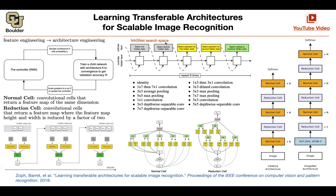Within each block, we have this definition that you can repeat this search process for B times, where B normally equals 5. But once this architecture is searched to be optimal, is that normal cell or reduction cell repeated through the entire architecture, or is each step individually searched? No, it's going to get repeated - you repeat the same normal cell every other layer or every other block. That actually reduces a lot of work.